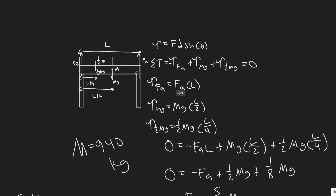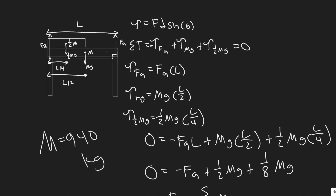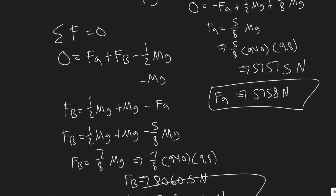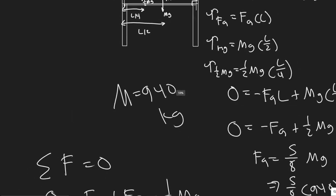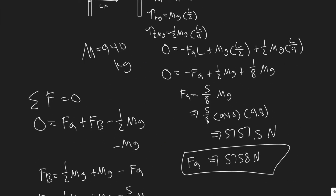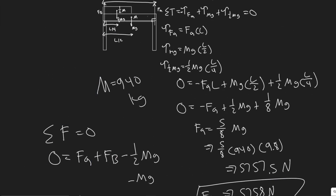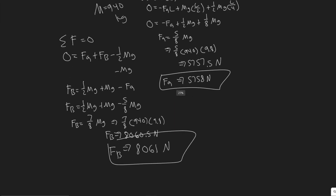Quick recap: we summed the torque about the FB point to eliminate it as an unknown and solved for FA. Then we summed the forces in the Y direction — since the system isn't moving, the sum equals zero — and solved for FB using the FA we already found. So FA equals 5,758 Newtons and FB equals 8,061 Newtons.